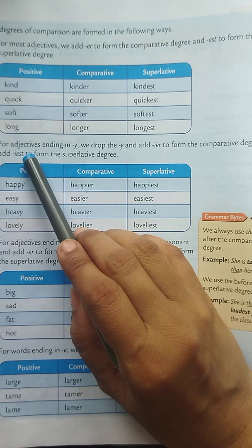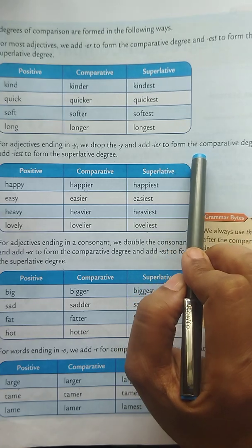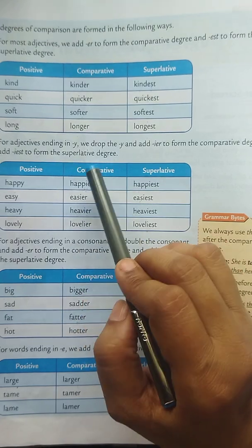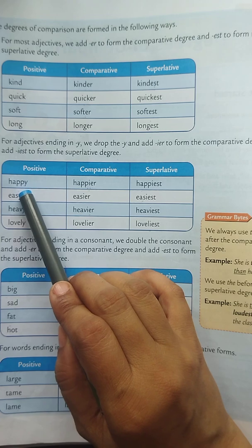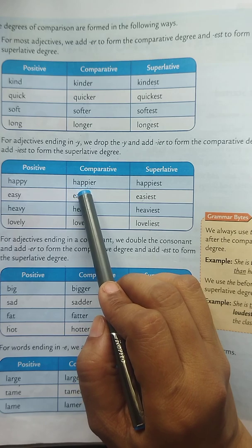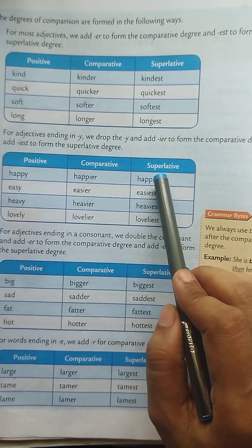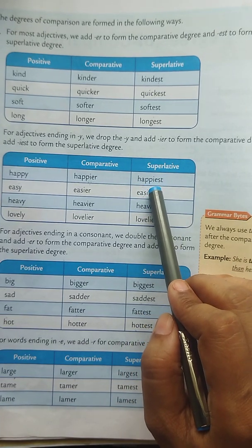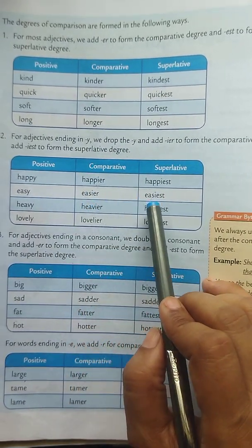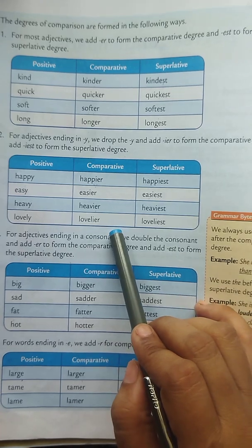For adjectives ending in Y, we drop the Y and add IER to form the comparative degree, and add IEST to form the superlative degree. For example: happy — the end letter is Y, so we drop the Y and add IER to get happier, and drop the Y and add IEST to get happiest. Happy — happier — happiest. Easy — easier — easiest. Heavy — heavier — heaviest. Lovely — lovelier — loveliest.